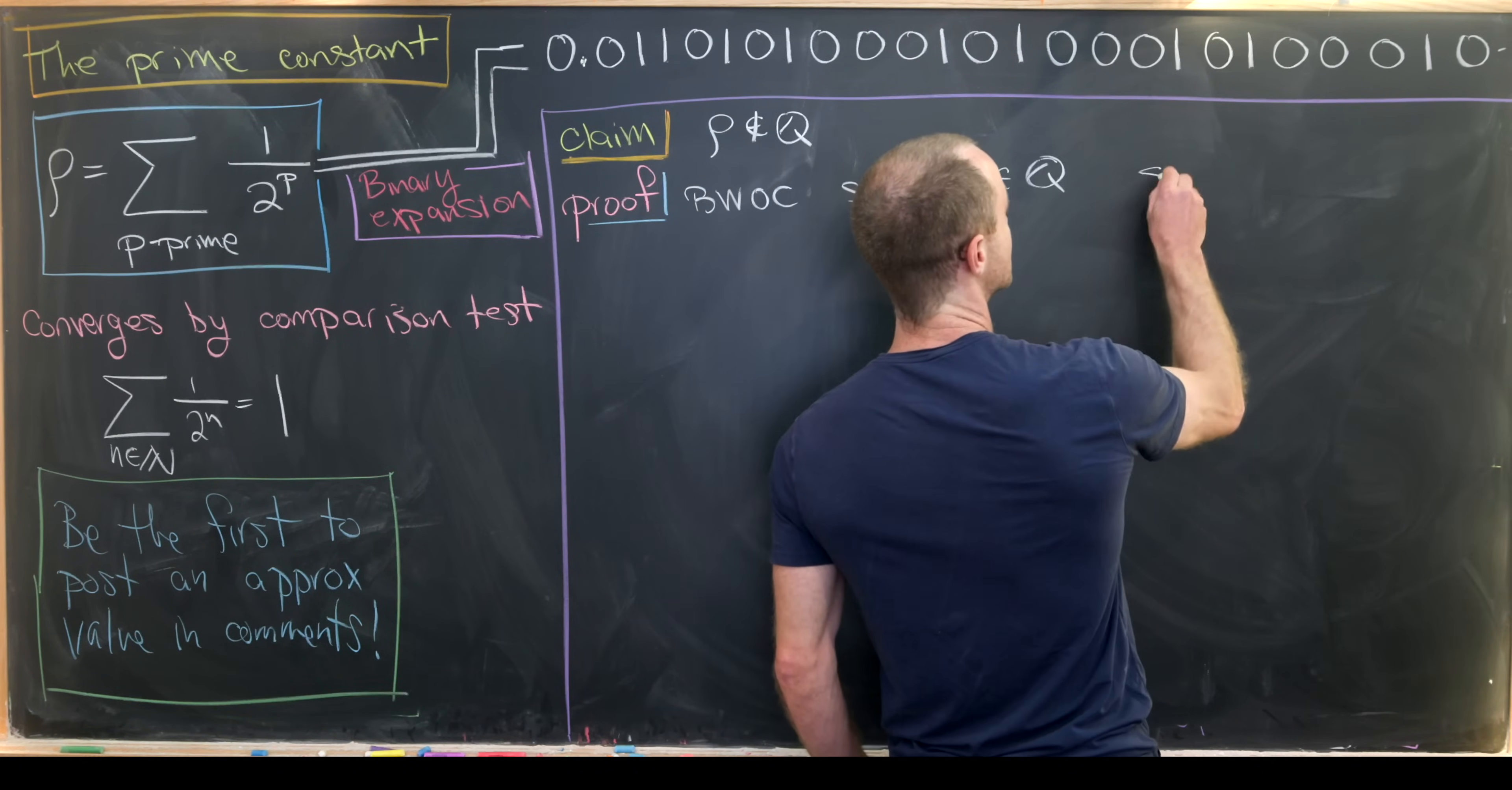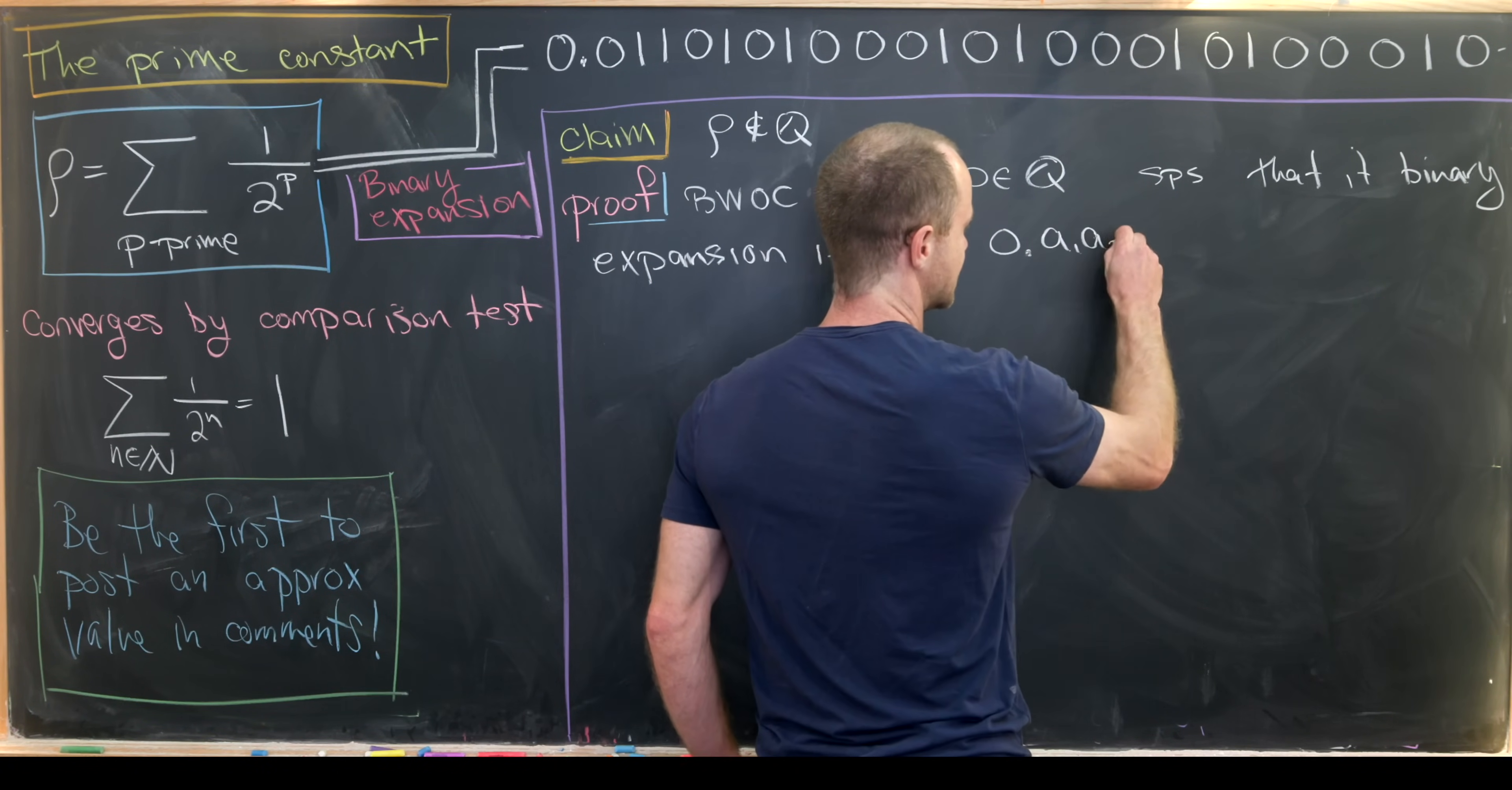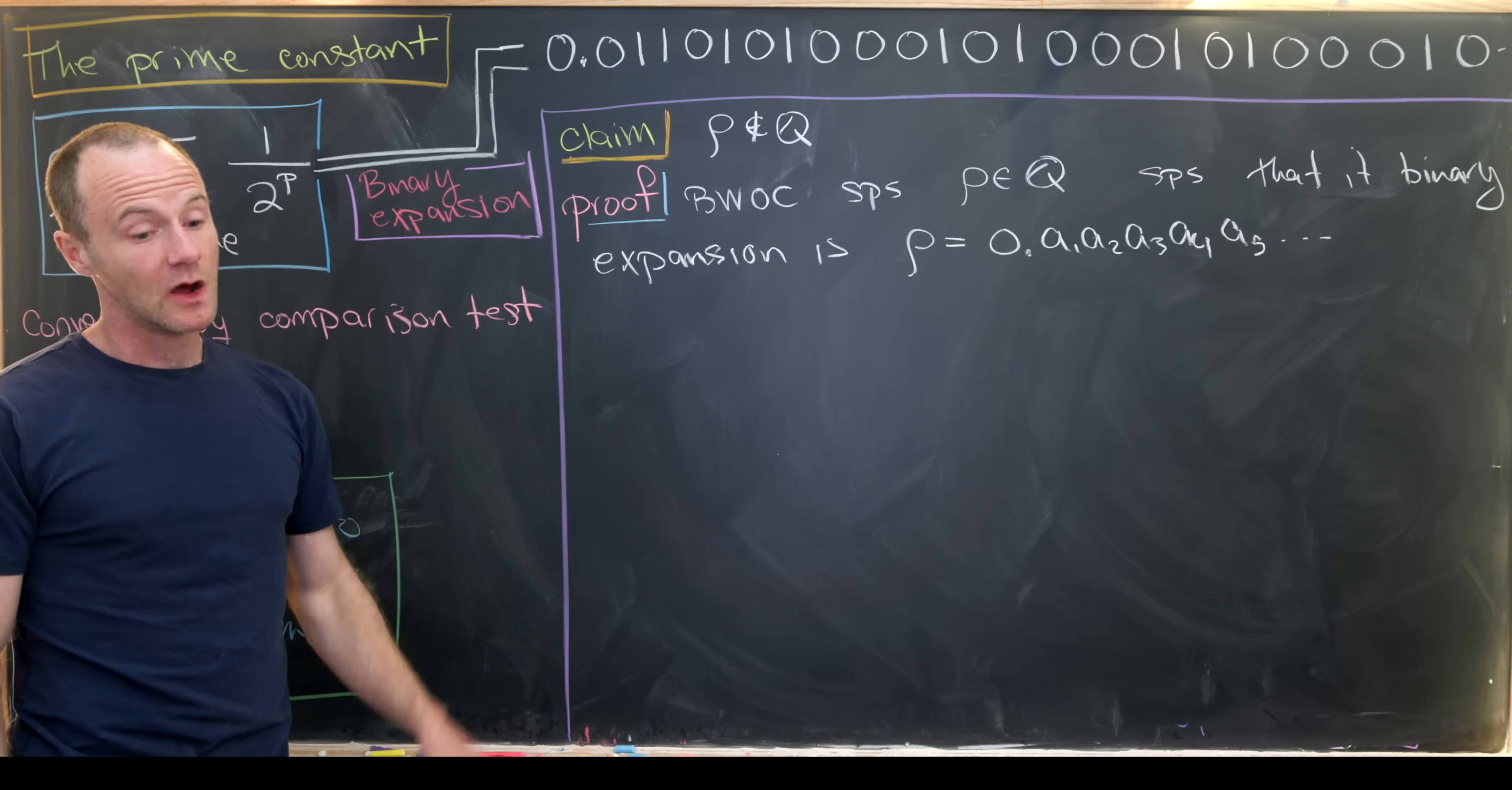Then also suppose that its binary expansion is given by the following digits. So I'll write it like this. We have rho equals 0.a1, a2, a3, a4, a5, and then so on and so forth. So of course we have enough numbers up here to write all of those down. But that being said, we just need some notation for maybe an arbitrary point after the decimal or binary point.